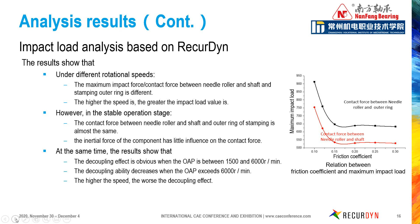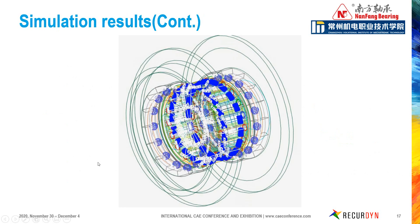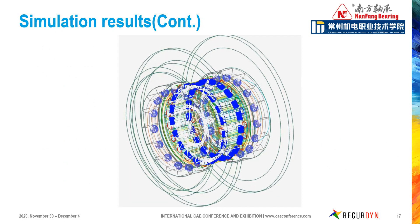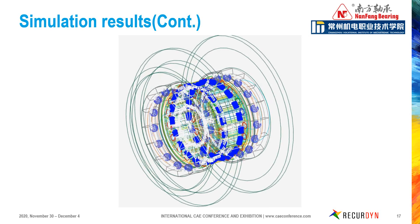The simulation result of OAP displays its decoupling function. This animation shows the OAP dynamic simulation result by RecurDyn. We can see the movement of each component and also the relative motion between parts clearly. If needed, RecurDyn can also show the force icon in the animation.